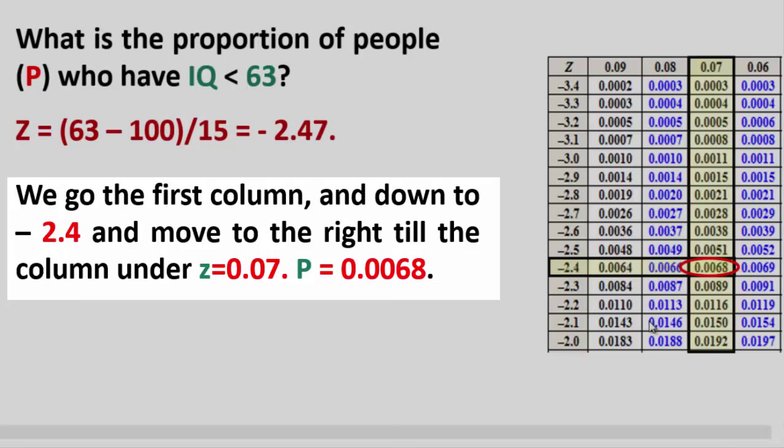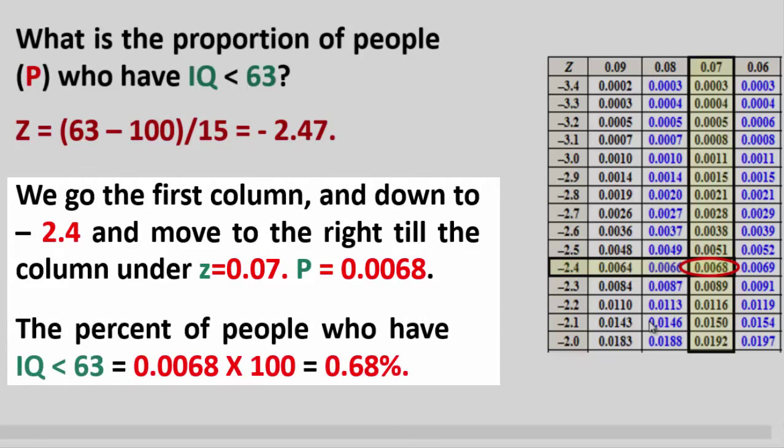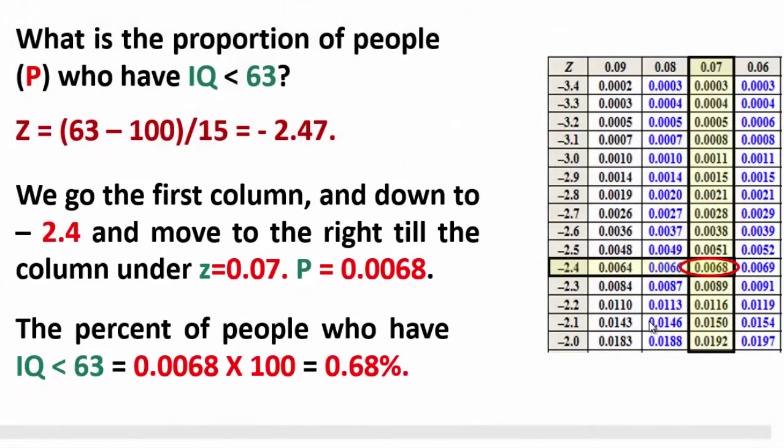That's P equals 0.0068. The percent of people with IQ less than 63 is equal to 0.0068 times 100, that's 0.68 percent.